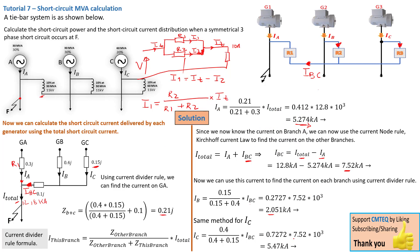As you can see, this is a simple current divider method — but before you can get here, there are obviously a lot of things you have to accomplish and get exactly right in order to get to these correct answers. This is it for this tutorial. If you've learned something, please don't forget to give us a thumbs up and subscribe to the channel. Stay tuned for more per unit short circuit calculation tutorials like this. Cheers.